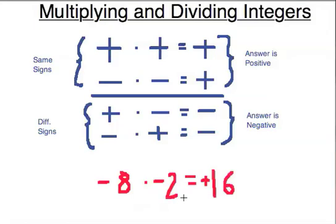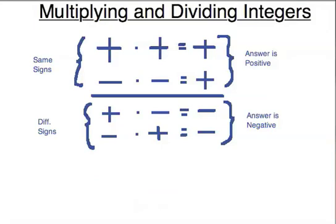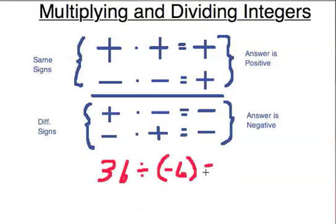Now let's try doing just a few division problems and then we'll be done. Let's start with positive 36 divided by negative 6. Remember, these rules apply also to division. I've got a positive divided by a negative — the signs are different, so the answer will be negative. And 36 divided by 6 is 6, so it's negative 6.